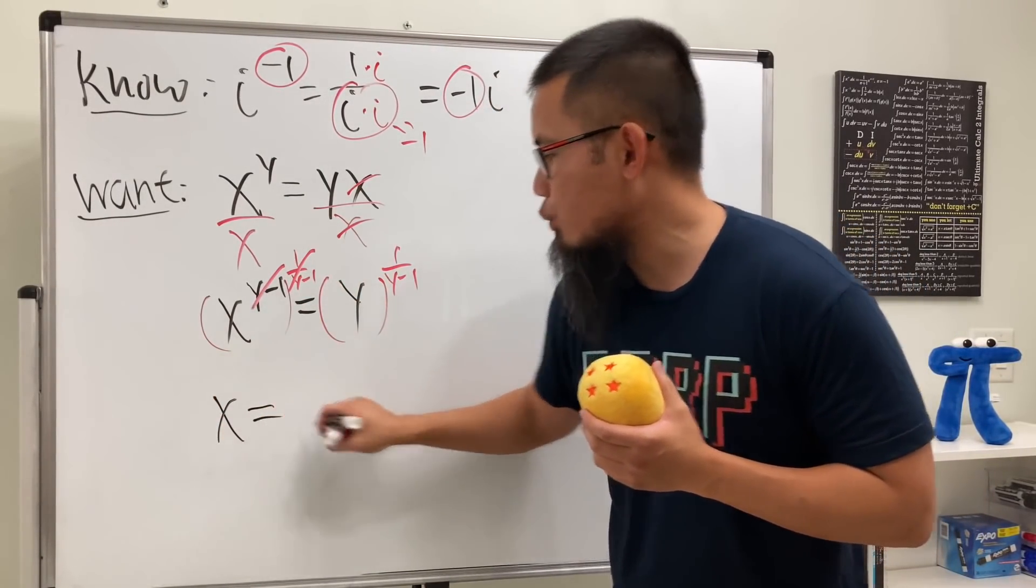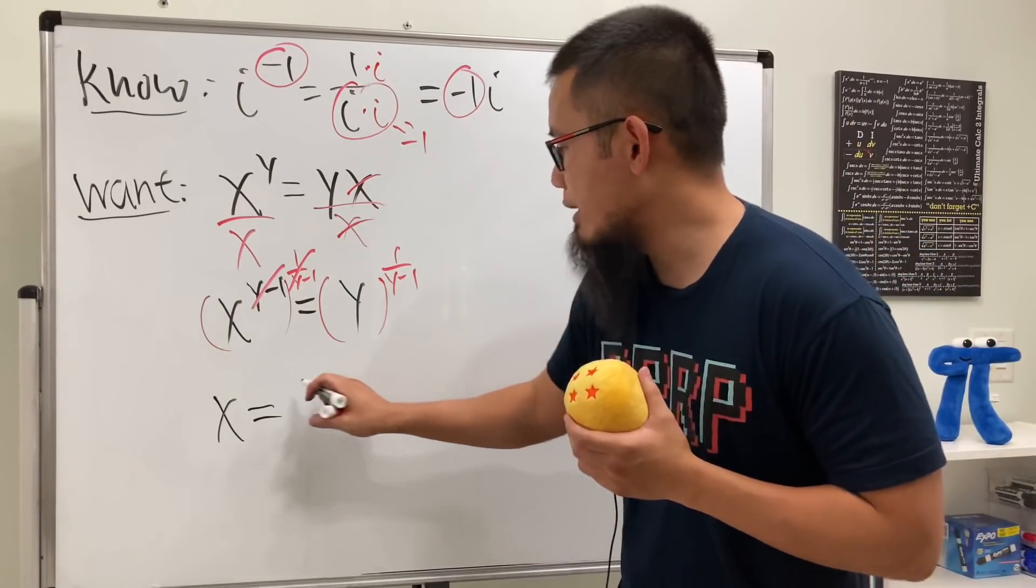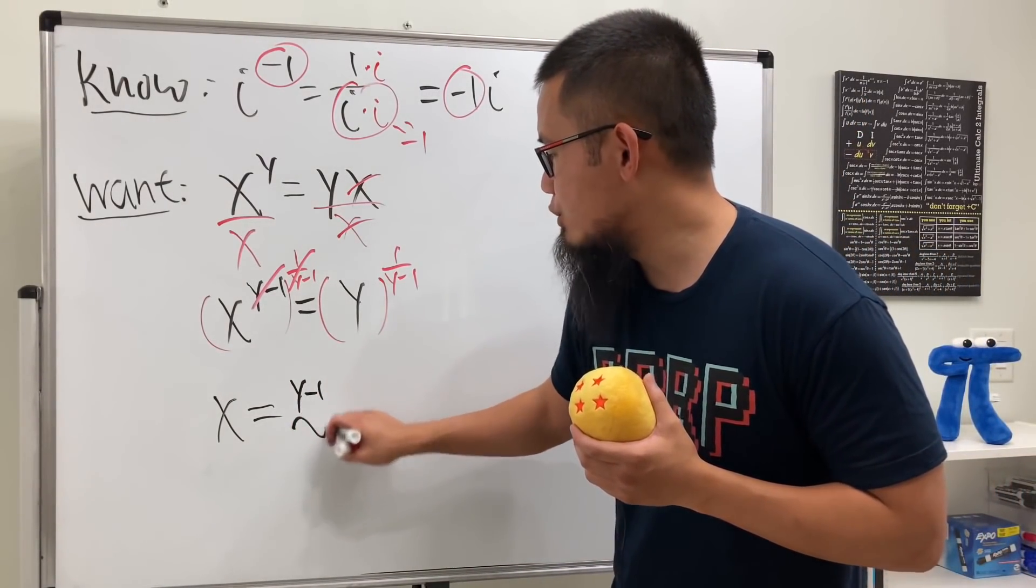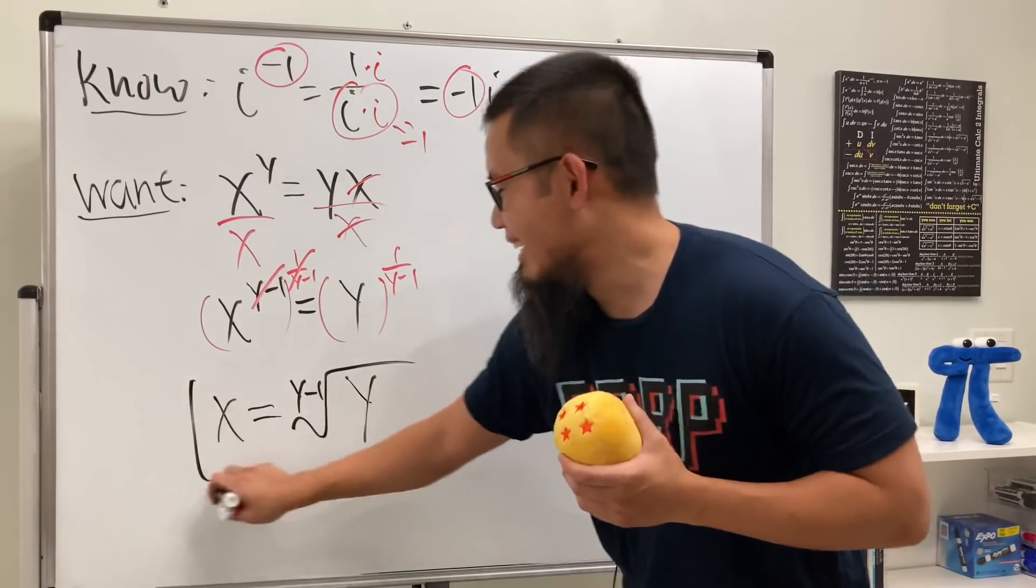You see the relationship between x and y now. x is equal to, we'll write this down in a cool way, y minus 1's root of y, like this.